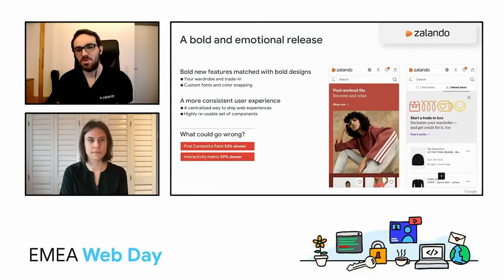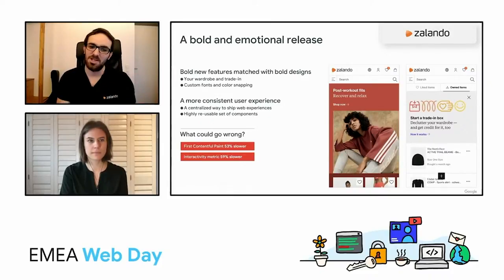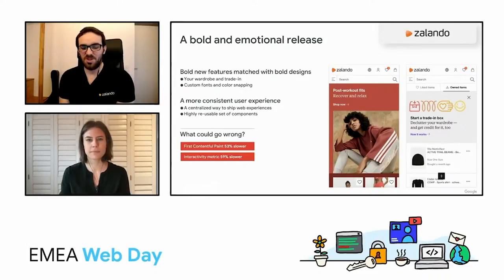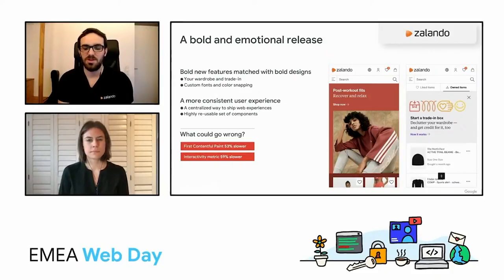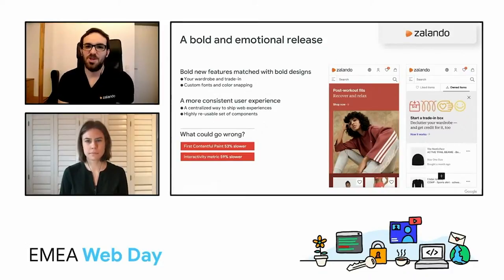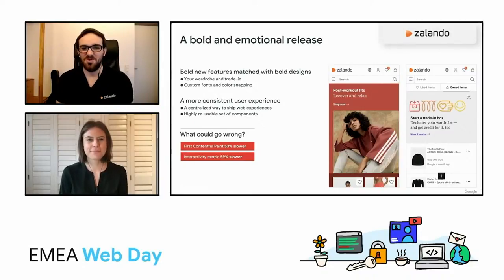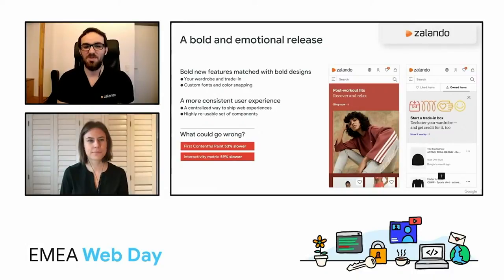We also wanted to apply a visual facelift to the website and be more playful. So we had this custom fonts, we had this color snapping feature where our images are kind of matching with the page's background. We also took the opportunity to have a more centralized way to ship features at scale with a highly reusable set of components. You can learn all about this in our engineering blog. But of course, like anything in software engineering and big releases, it didn't really go as smooth as we planned.